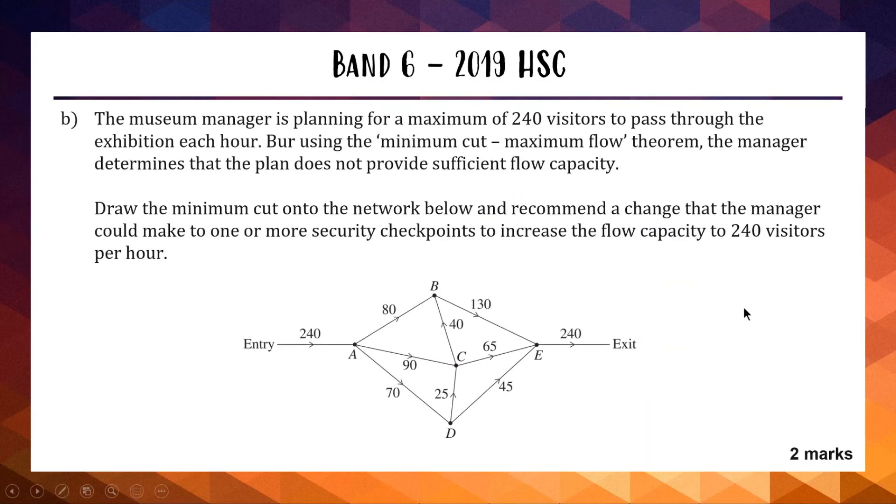The capacity of our cut is 70 plus 90 plus 130 gets us an answer of 290. For the next part, we've got museum manager's planning for a maximum of 240 visitors to pass through the exhibition. By using the minimum cut maximum flow theorem, the manager determines that the plan does not provide sufficient flow capacity. Draw the minimum cut on the network and recommend a change that's going to increase capacity to 240. There is a cut through this network that blocks 230 visitors.